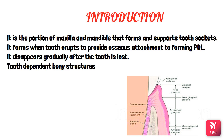The size, shape, location, and function of the teeth will determine the morphology of the alveolar bone. When the tooth is lost, the alveolar bone disappears gradually — it is a tooth-dependent bony structure. Any slight repositioning of the tooth by occlusal forces or orthodontic forces will rely on the adaptability of the alveolar bone, so any change in the teeth will also affect the alveolar bone.